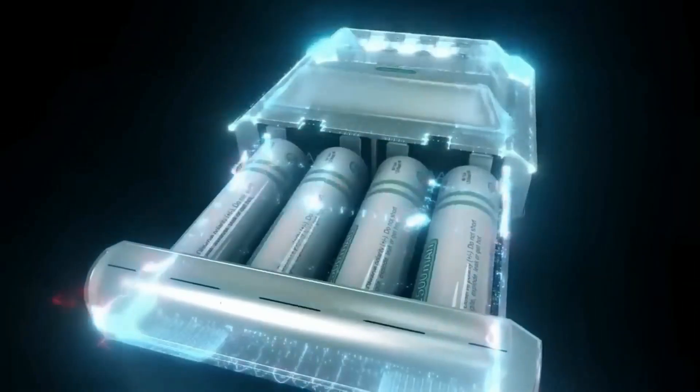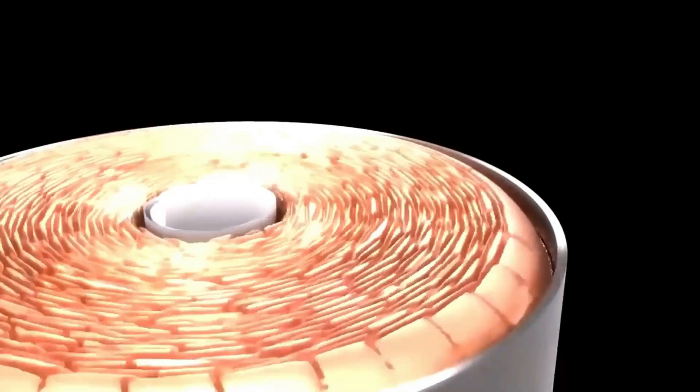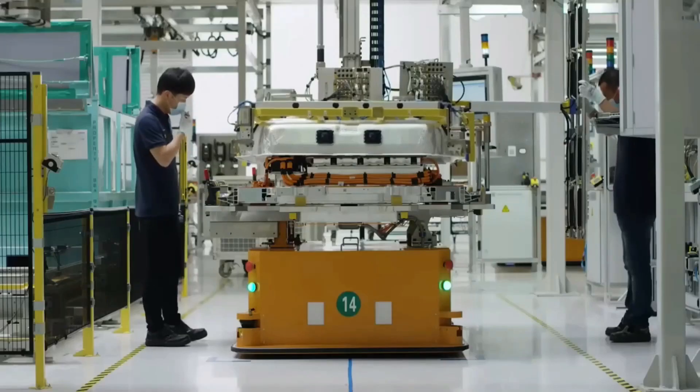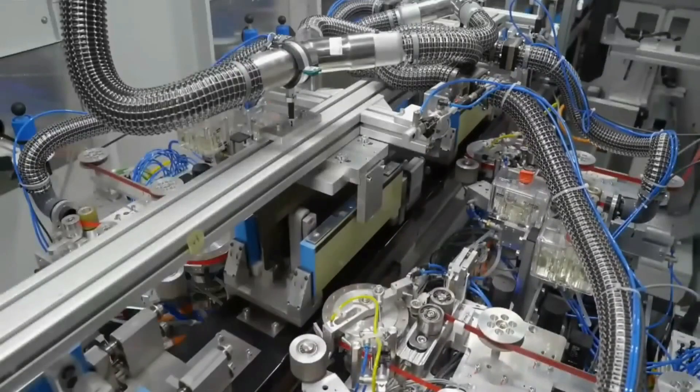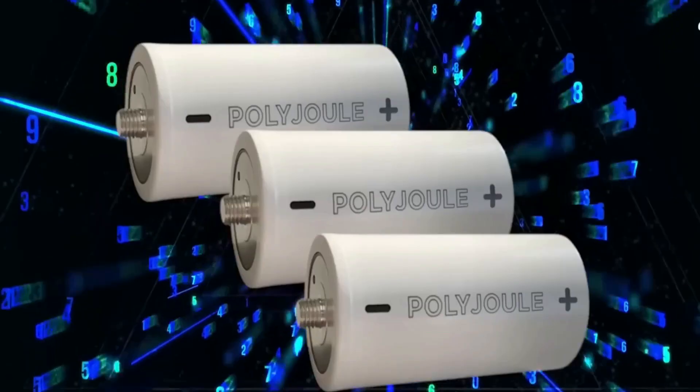Behind this progress lies the power of computational technology. Simulating chemical reactions on computers allows researchers to identify promising compounds and conduct lab tests more efficiently. The rapid advancement of this technology is poised to revolutionize not only batteries, but also render today's computers obsolete.